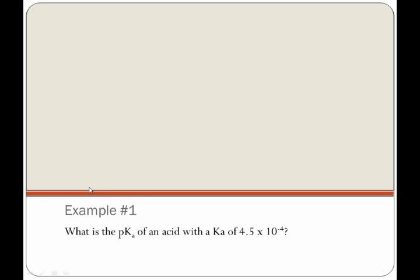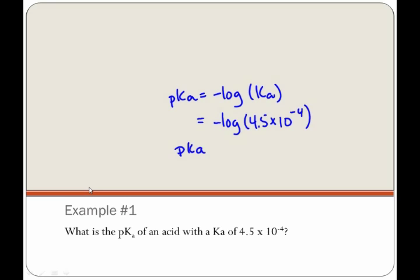What is the pKa of an acid with a Ka of 4.5 times 10 to the negative 4? Well, we know that pKa equals the negative log of Ka. I'm given the Ka in the problem: 4.5 times 10 to the negative 4. So I'll take the negative log of 4.5 times 10 to the negative 4, and my pKa is equal to 3.3.